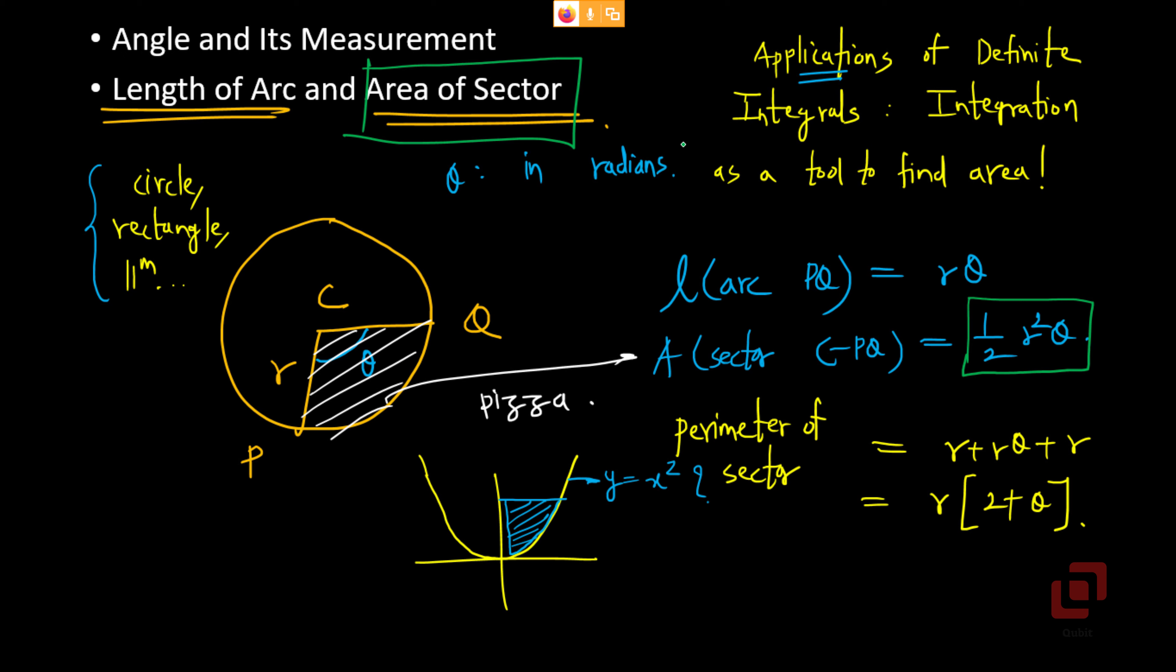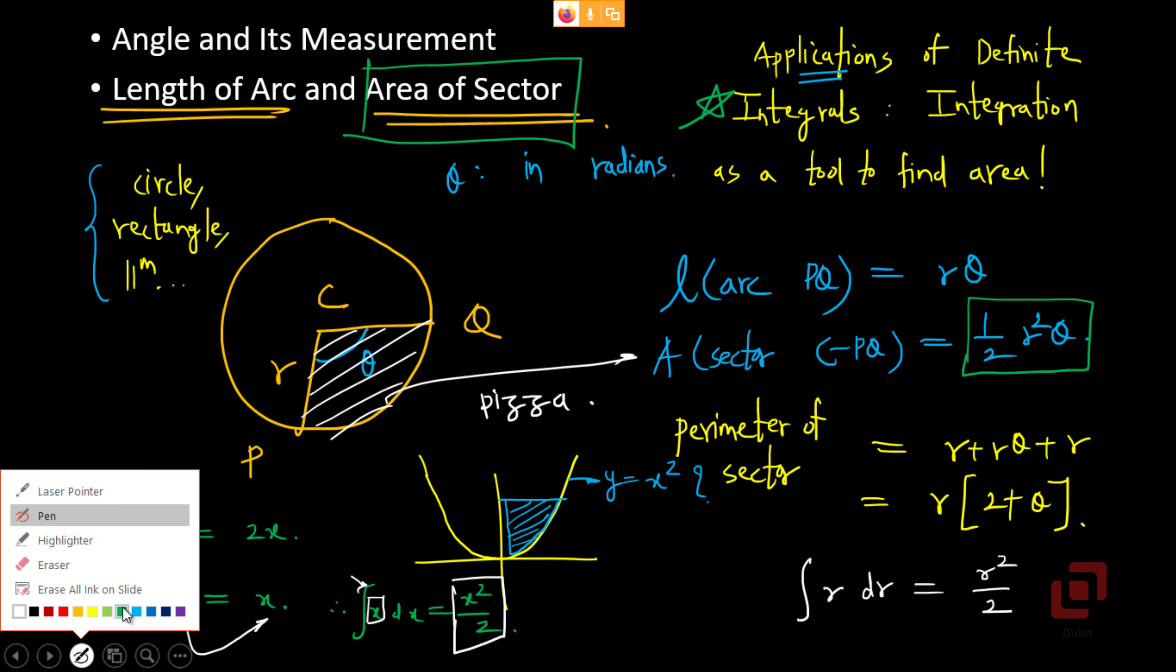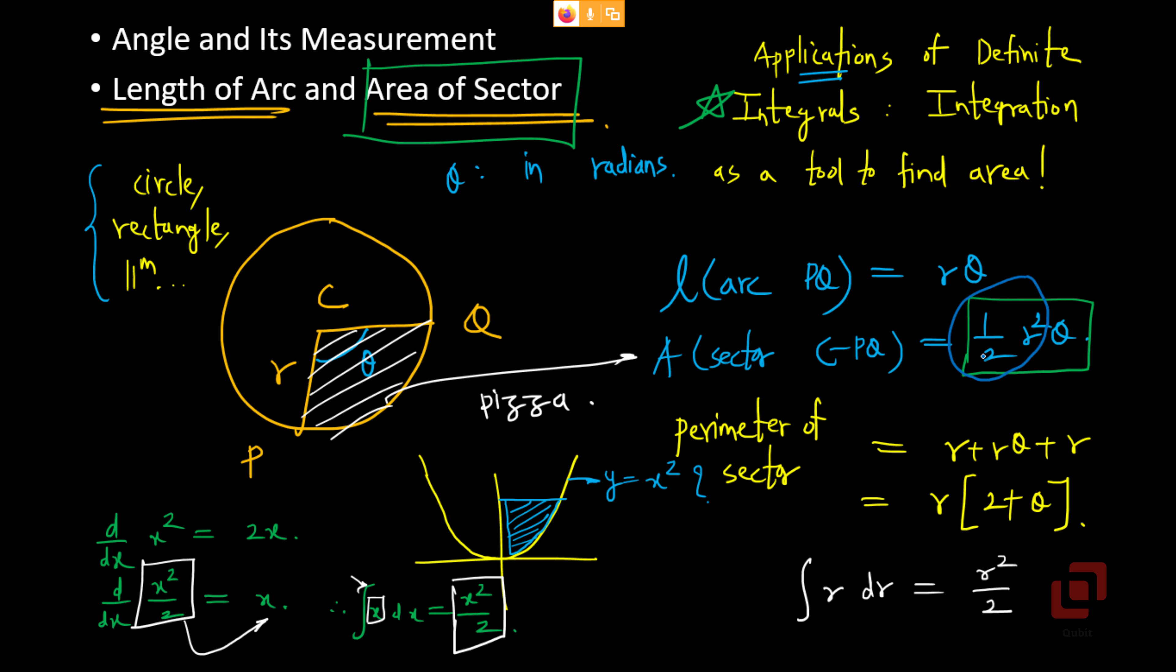And even the area of the sector formula which is 1 by 2 r squared theta, this can also be obtained with the help of integration. I do not know whether you are aware of this. Derivative of x squared is 2x. So derivative of x squared by 2 is x. Therefore, integral of x will be x squared by 2, because differentiation and integration are complementary. And now look at this formula. If you integrate r, what will you get? You will get r squared by 2. So all these things are connected to each other. So we will revisit the area problem in integration.